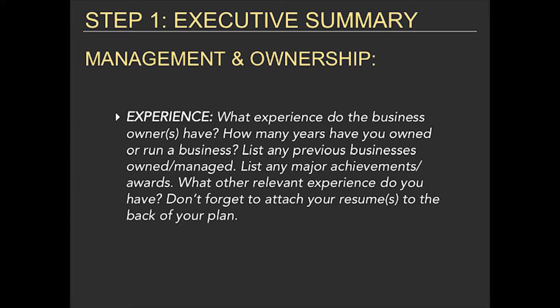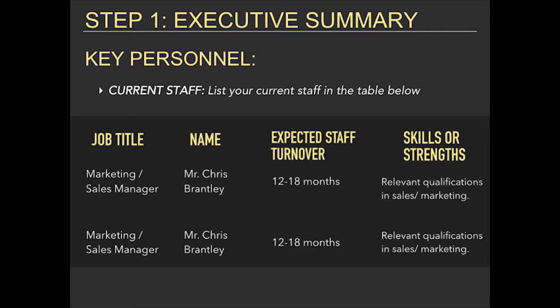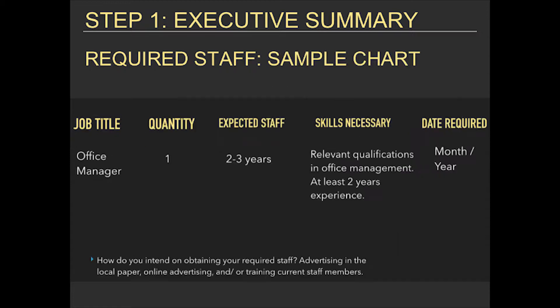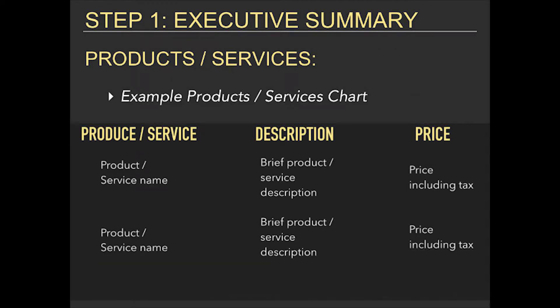Key personnel: list your current staff in the table provided. Also list your required staff. Products and services: use the example products and services chart to add each product or service, its description, and include the price with tax.